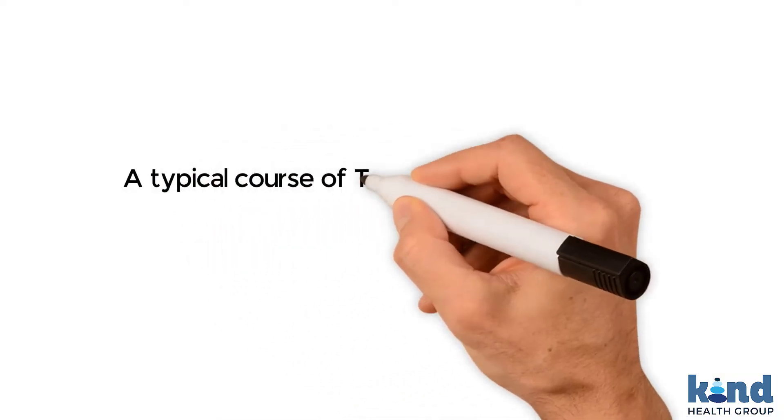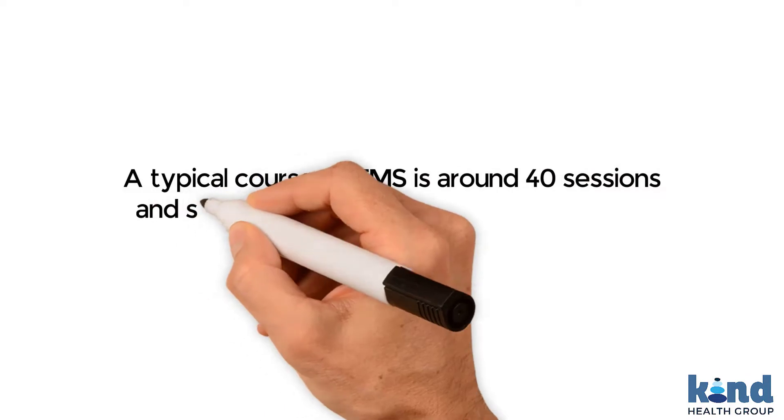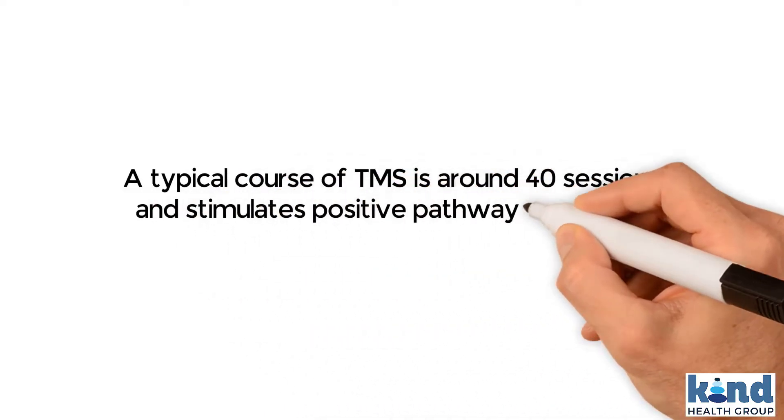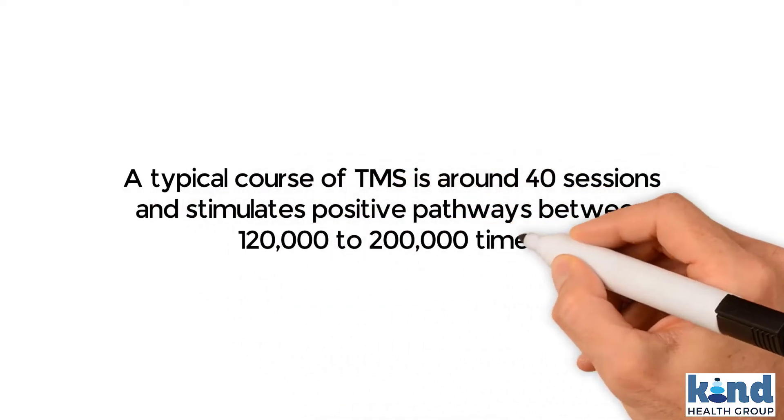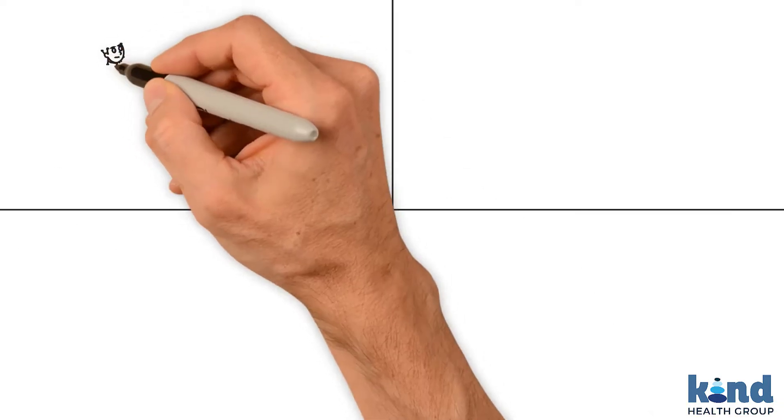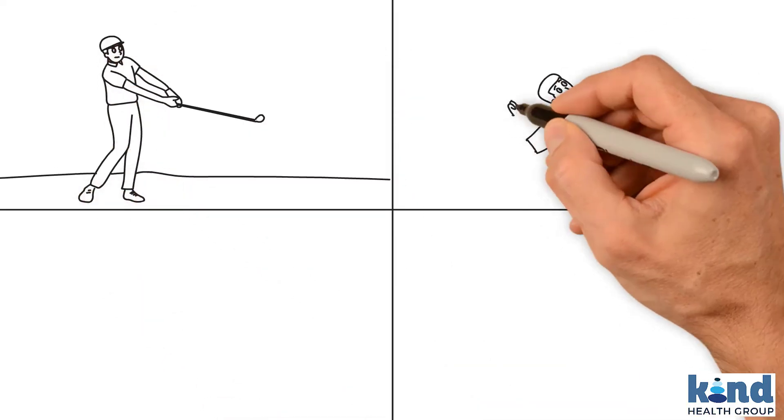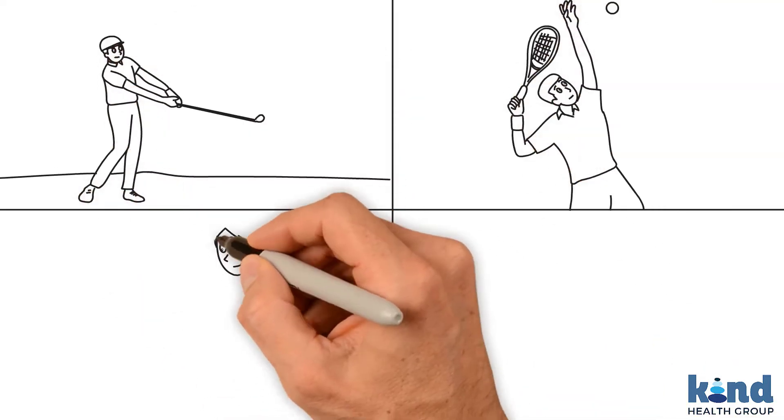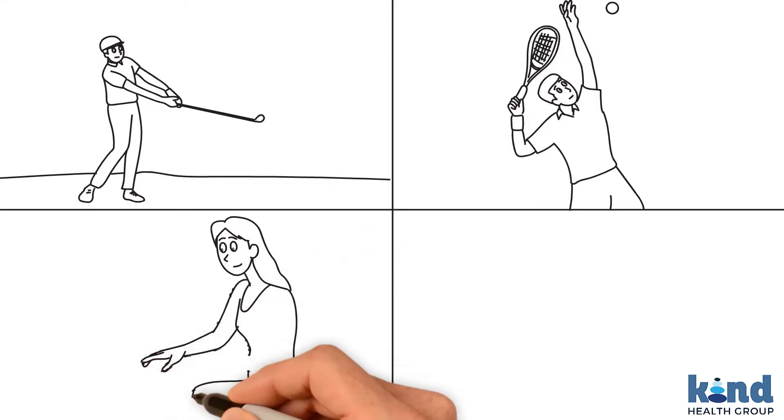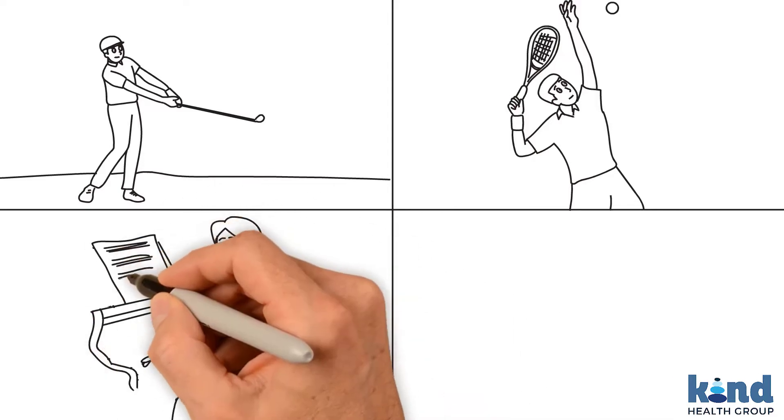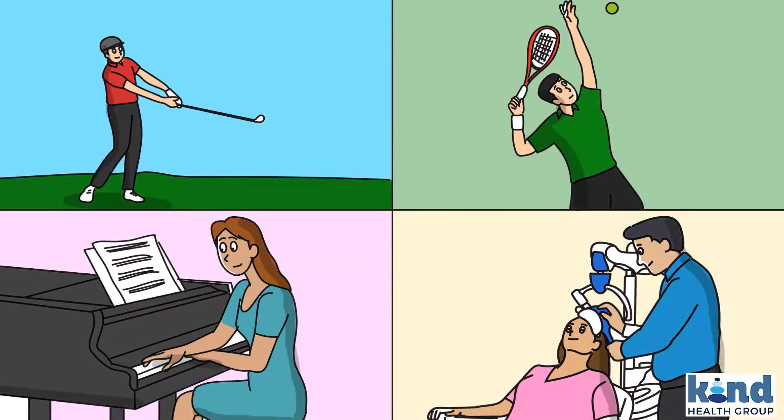A typical course of TMS is around 40 sessions and stimulates positive pathways between 120 and 200,000 times. Now imagine practicing a golf swing or tennis serve or song on the piano 120 to 200,000 times. You get pretty good at it. That's a lot like what the TMS process is.